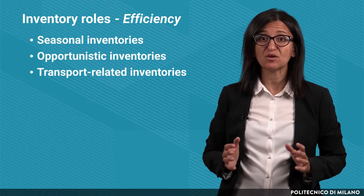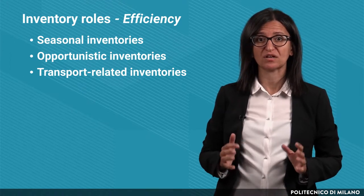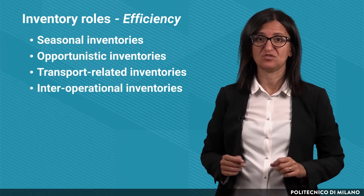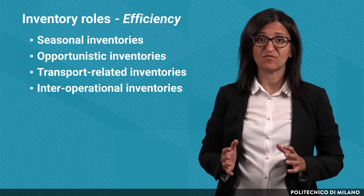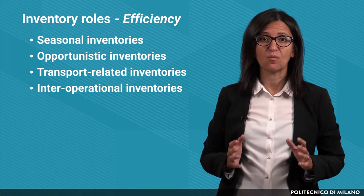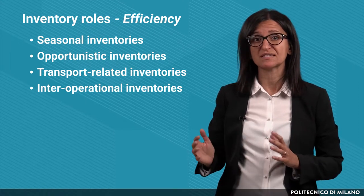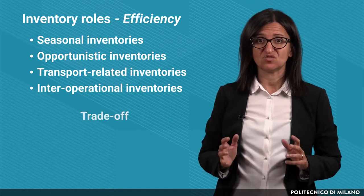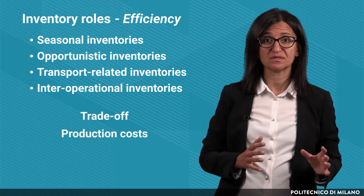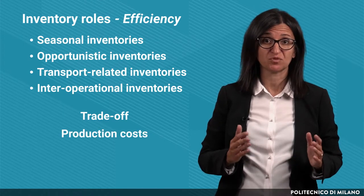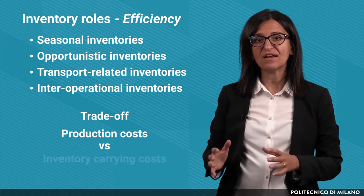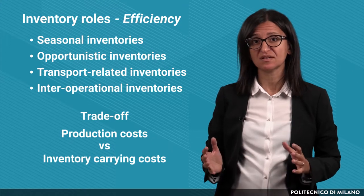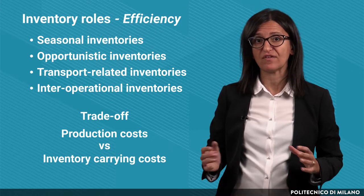A similar trade-off can be considered between subsequent production phases. In this case, we talk about interoperational inventories. This is the case, for example, of the production of components and the subsequent assembly phase, which rely on the stocks of all the components. The trade-off is between the production costs, which are expected to decrease with large production batches, and the inventory carrying costs, which are instead expected to increase, since large batches lead to higher levels of inventories.